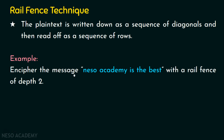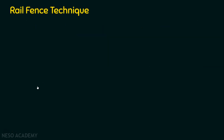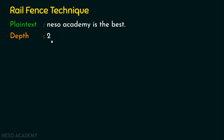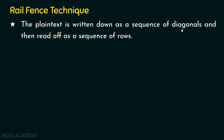Let's see an example. Encipher the message 'Neso Academy is the best' with a rail fence of depth 2. Analyzing the question: we are going to encrypt the plaintext 'Neso Academy is the best' using the rail fence transposition technique with a depth value of 2. The information given is: plaintext = 'Neso Academy is the best', depth = 2. The plaintext is written down as a sequence of diagonals, and then the ciphertext is generated by reading off as a sequence of rows. Let's apply this principle.